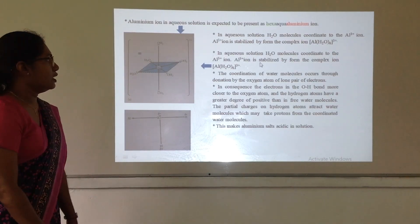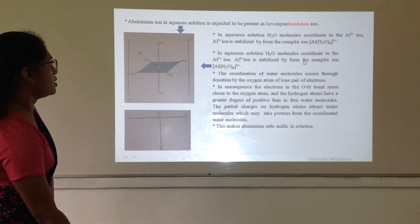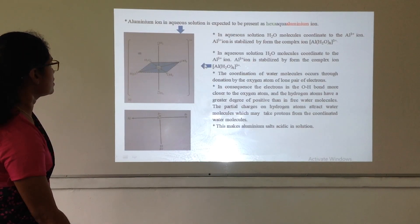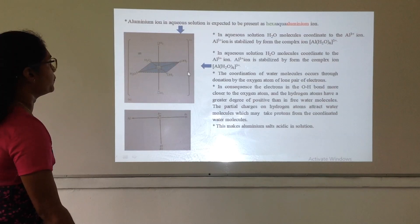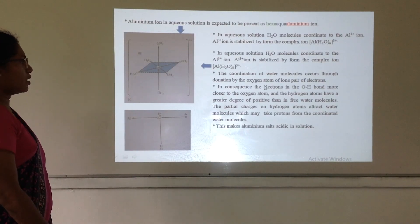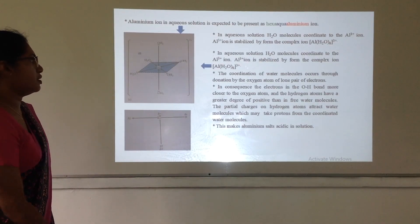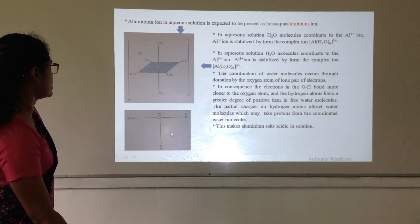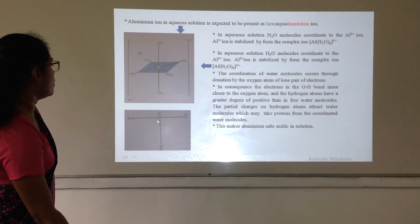So, in aqueous solution, water molecules coordinate to aluminium ions and stabilize by forming this complex ion. This coordination of water molecules occurs through donation by the oxygen atom of a lone pair of electrons. Here I have shown you that this is the water molecule and a lone pair of oxygen coordinates to that aluminium ion and form this bond.